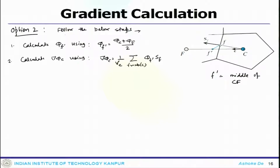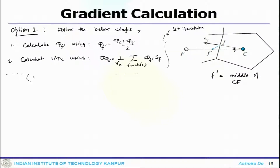First step: you calculate phi_f prime using phi_f prime equals (phi_c plus phi_f) divided by 2. Second step: you calculate delta phi_c using the standard procedure of (1/Vc) summation over all faces of phi_f prime times Sf. At the first iteration, you calculate the gradient in the whole domain using these two steps.